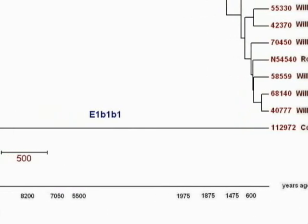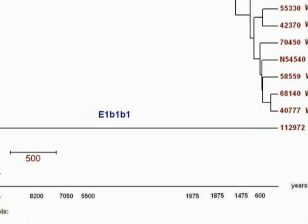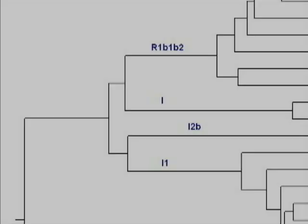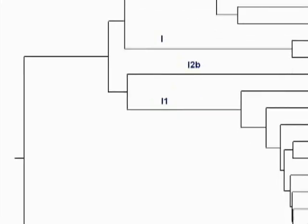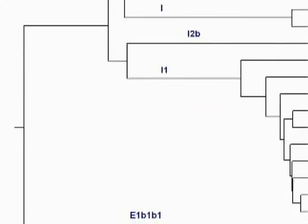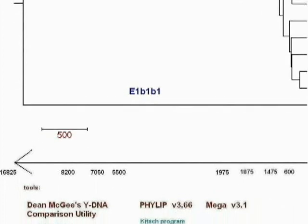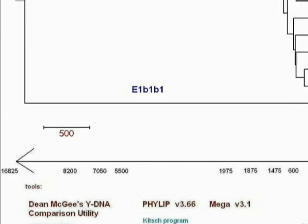If you look at the time scale below the graph, you can see that the haplotype groups coalesce together at some distant point in time. In this graph, the time scale indicates that most of the haplotype groups were formed some 7,000 years ago. That's because we don't have enough data in this chart. Geneticists usually agree that haplotype groups were actually formed more than 10,000 to 20,000 years ago.